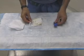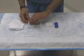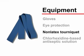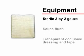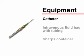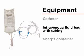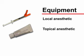Gather the equipment and have it ready at the bedside before beginning the procedure. You will need gloves, eye protection, a non-latex tourniquet, chlorhexidine-based antiseptic solution, sterile 2x2 gauze, a saline flush, a transparent occlusive dressing and tape, and appropriately sized catheter ranging from 14 to 24 gauge, an intravenous fluid bag with tubing, and a sharps container. A local or topical anesthetic may be required if the catheter is 20 gauge or greater.